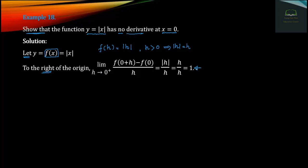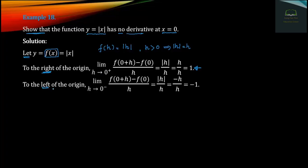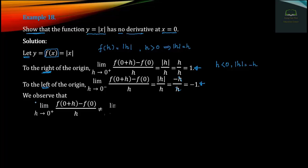The right-hand limit as h approaches zero gives 1. We add zero terms. We get M1, and we add 1. The second limit gives 0 minus 1, which equals negative 1. The left-hand limit gives minus 1. So the right-hand limit equals 1 and the left-hand limit equals minus 1.